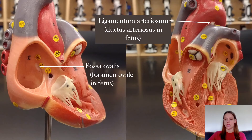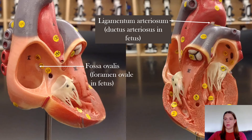There's also the ligamentum arteriosum, which connects the pulmonary trunk to the aorta. It's another bypass system — in the fetus it was the ductus arteriosus, taking some of the blood from the pulmonary trunk to bypass pulmonary circulation and go right into systemic circulation.